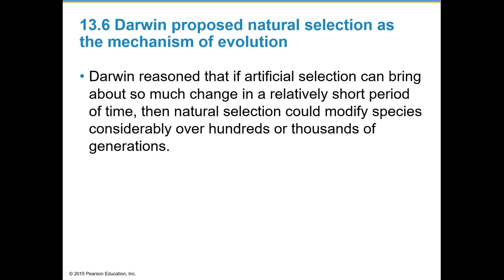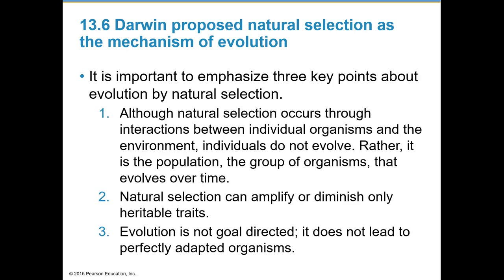Darwin reasoned that if artificial selection can bring about so much change in a relatively short time, then natural selection can modify species considerably over hundreds or thousands of generations. Three key points about evolution by natural selection: although natural selection occurs through interactions between individuals and the environment, individuals themselves do not evolve — rather it's the entire population that evolves over time. Natural selection can amplify or diminish only heritable traits, and evolution is not goal-directed and does not lead to perfectly adapted organisms.